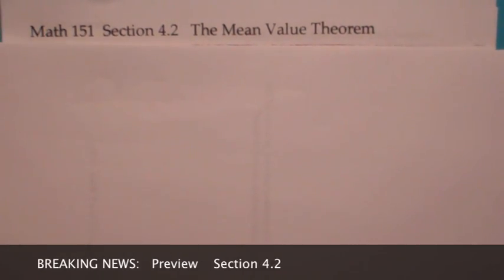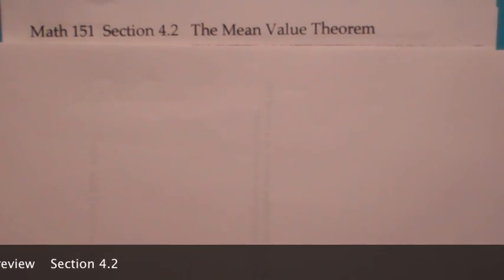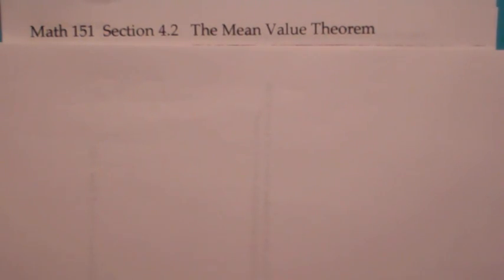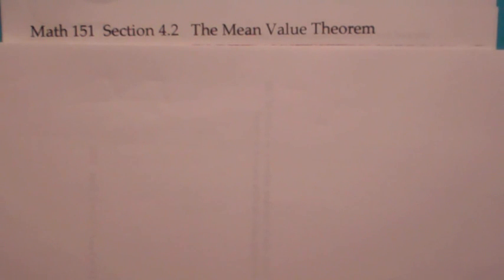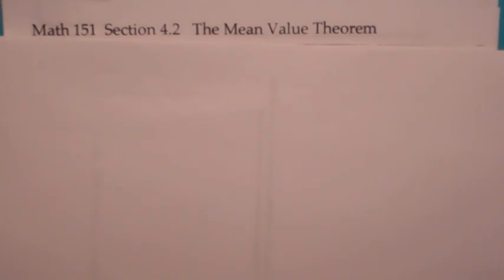Welcome to section 4.2. This section consists of two theorems. The first one is called Rolle's Theorem, and we basically use Rolle's Theorem to prove the second one, called the Mean Value Theorem. The Mean Value Theorem is really the most important of the two — it's the one we're going to use in this course and in Math 152 to prove a lot of results.